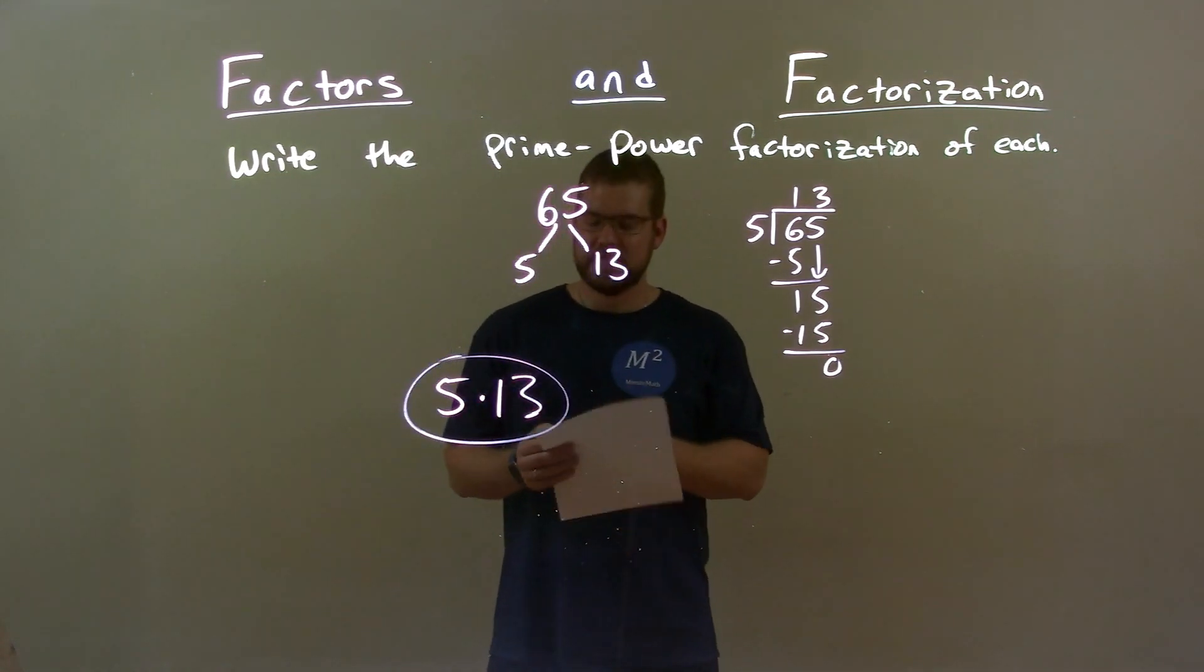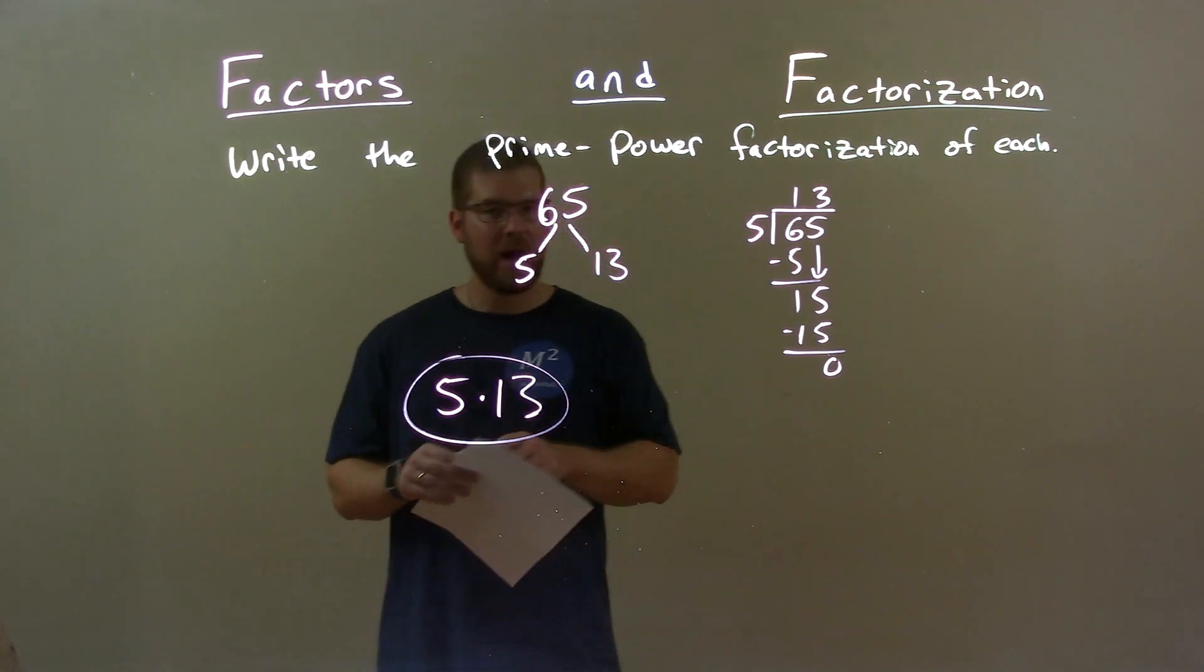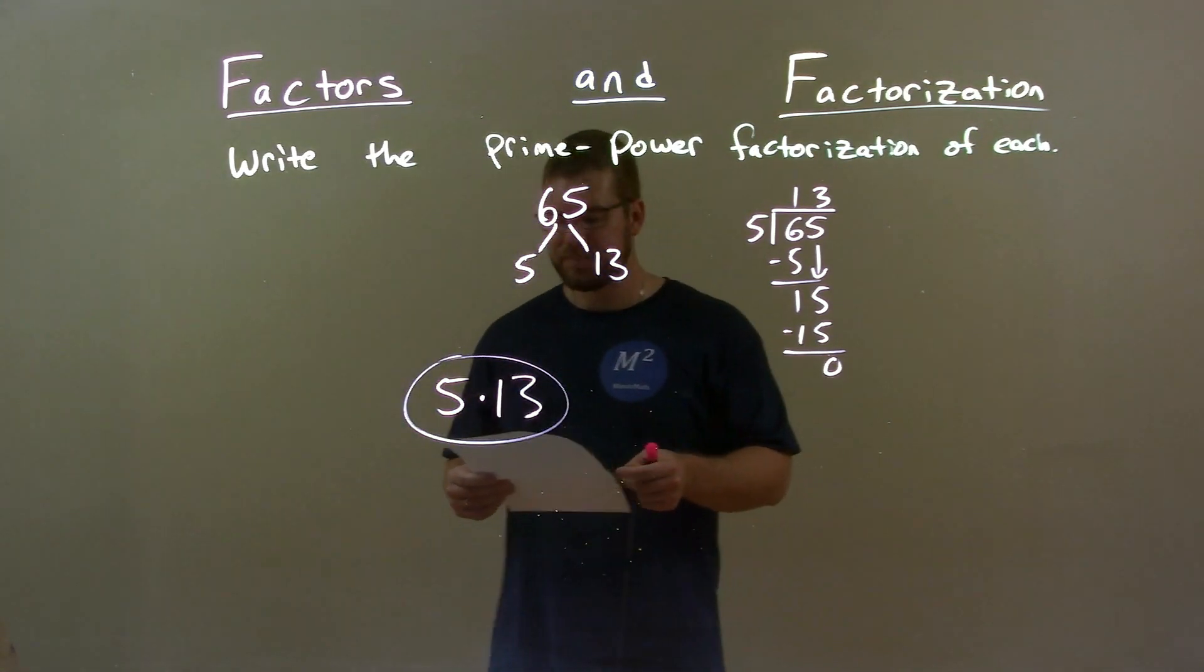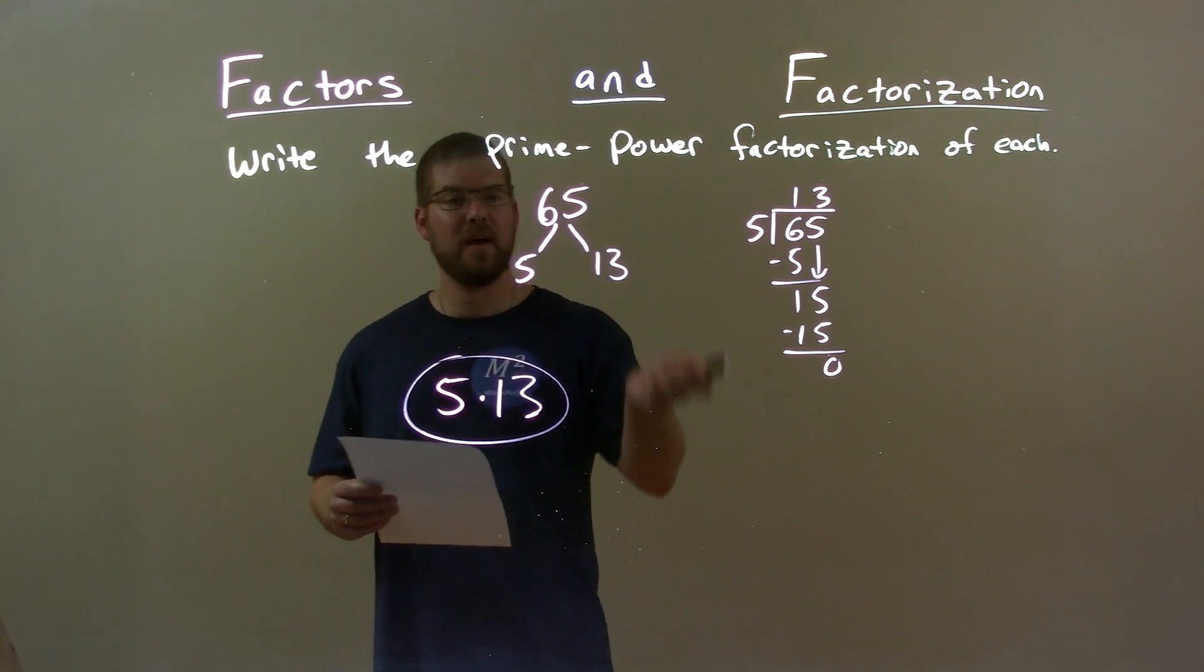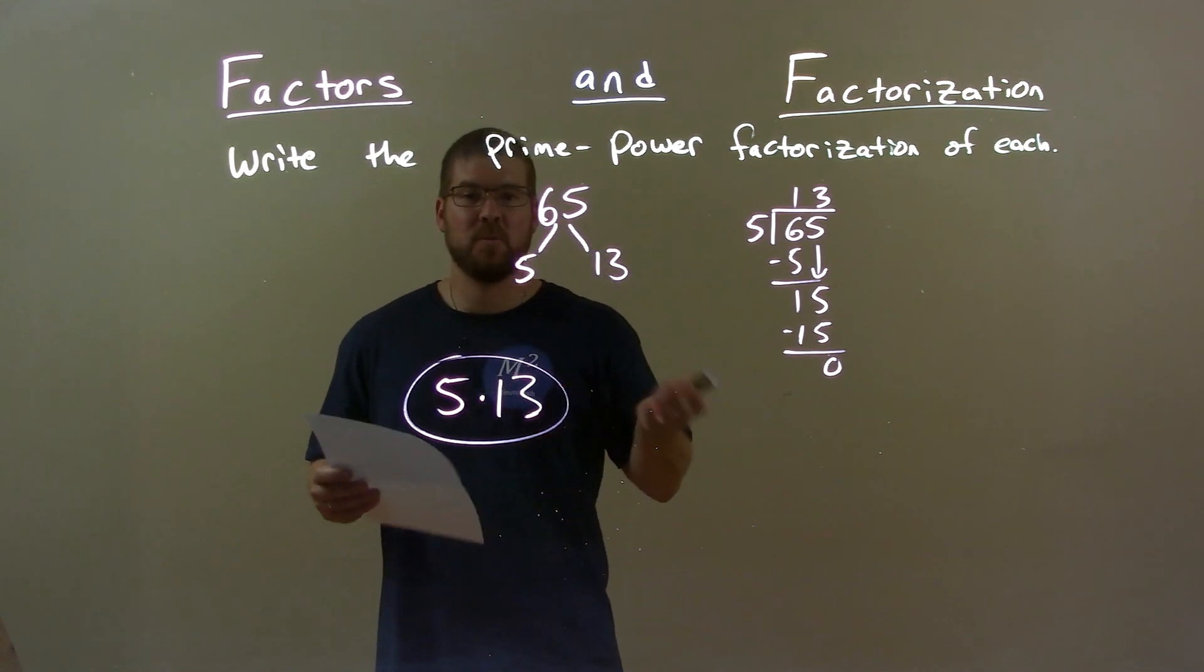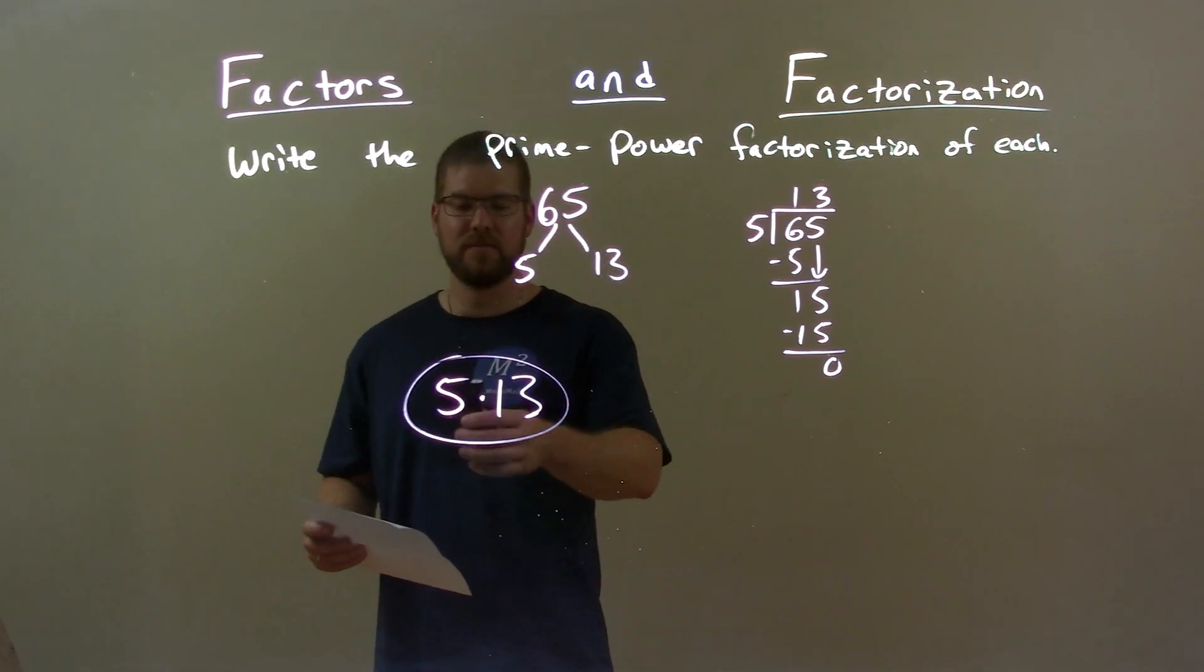Quick recap: we're given 65, and we have to write the prime power factorization of it. 65 breaks down to 5 times 13. Both of these are prime numbers, so we're done. Final answer: 5 times 13.